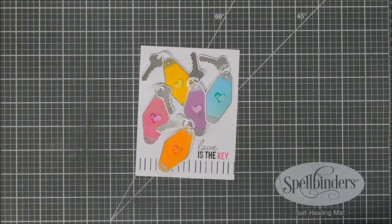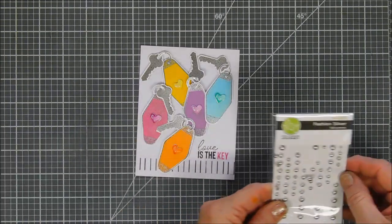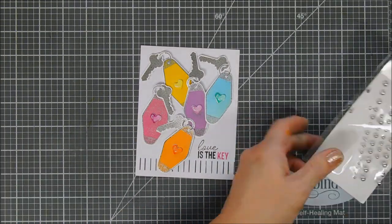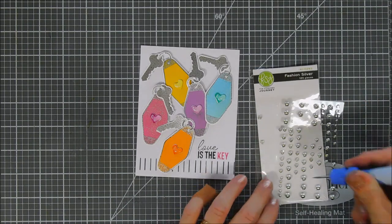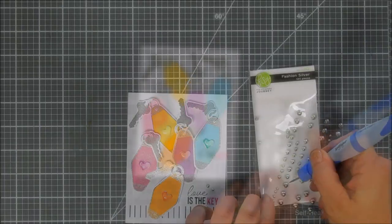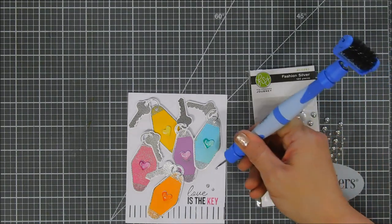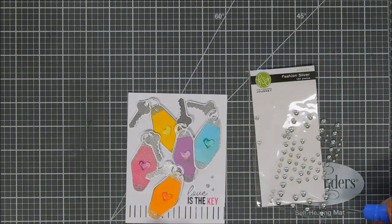After we have this done I'm going to bring down and we have a little bit of an open area just above the sentiment so I think I'm going to bring in some silver embellishments. I think we're going to add three just above our sentiment to balance out the silver in our card and then that finishes off my project today using the Spellbinders card kit of the month.